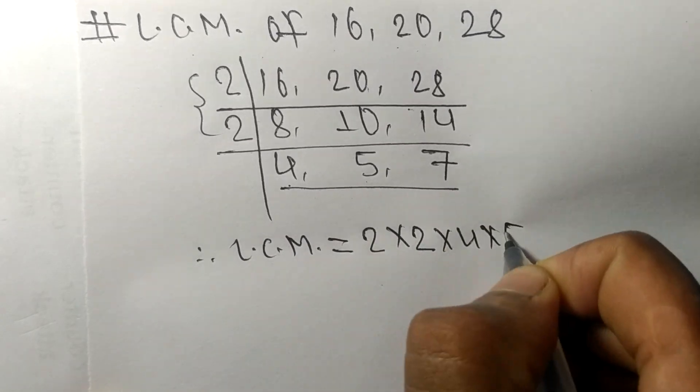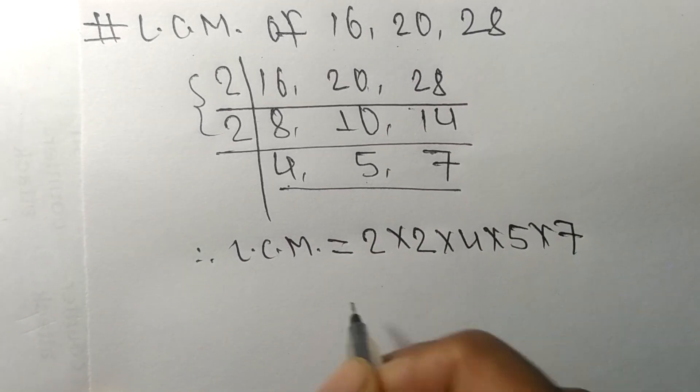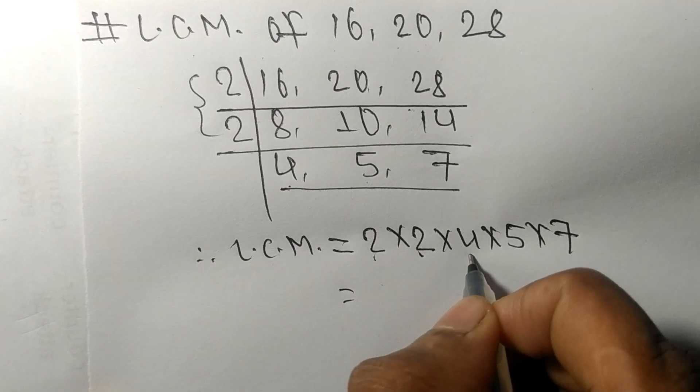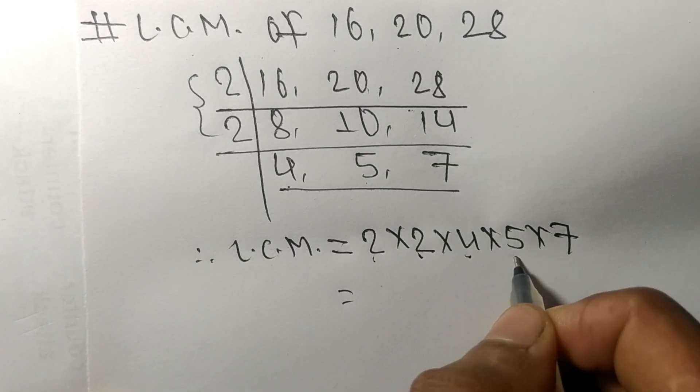2 times 2 mean 4, 4 times 4 mean 16, 16 times 5 mean 80.